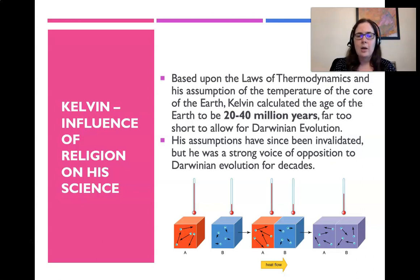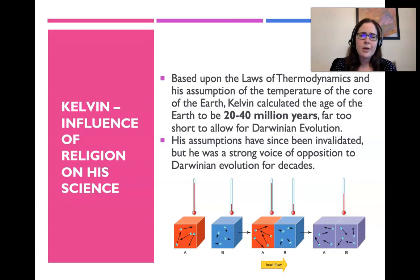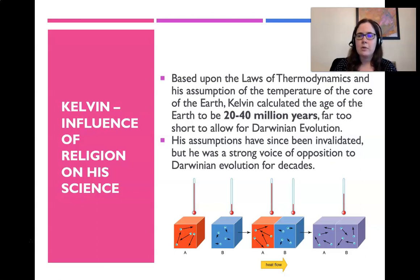One of Kelvin's quotes is: 'If you think strongly enough, you will be forced by science to the belief of God.' He was very outspoken as a Christian and was willing to debate atheists and those against Christianity. One specific influence of his faith on his science was about the age of the earth — Kelvin used the laws of thermodynamics and made certain assumptions to calculate the age of the earth as 20 to 40 million years, far too short for Darwinian evolution, shortly after Darwin had published his Origin of Species. Unfortunately, Kelvin's assumptions have since been invalidated, but he was a very strong voice of opposition to Darwinian evolution for decades.